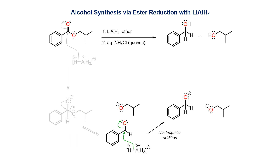It is impossible to isolate the aldehyde at this point because it is so reactive, and LAH is such an aggressive reagent. A second hydride nucleophile therefore adds to the electrophilic carbonyl, thereby reducing the aldehyde down to the primary alkoxide.